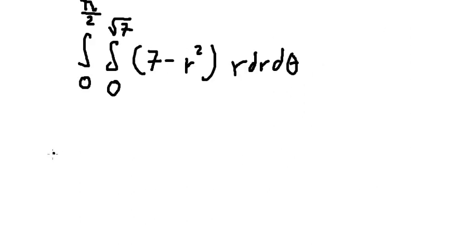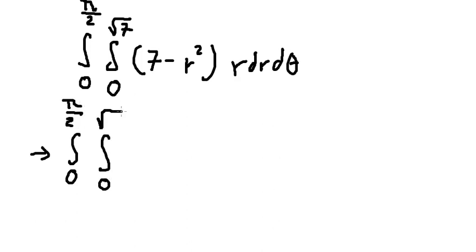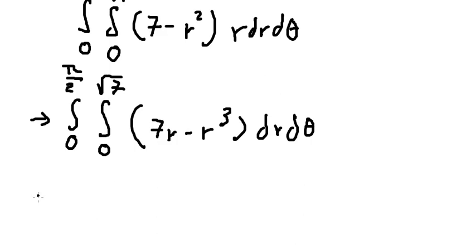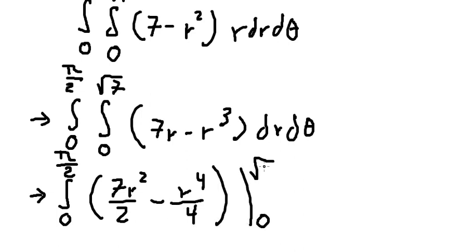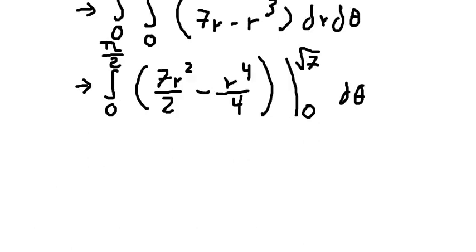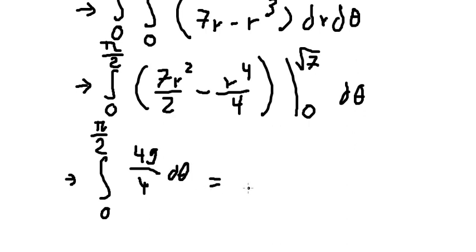Now we calculate: integrating R times (7 minus R squared) gives 7R squared over 2 minus R to the power of 4 over 4, evaluated from 0 to the square root of 7. Substituting gives 49 over 4, and this is the final answer.